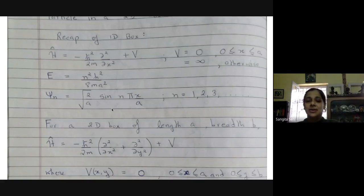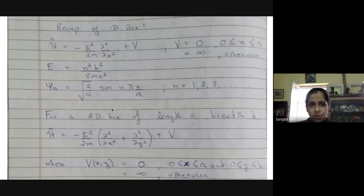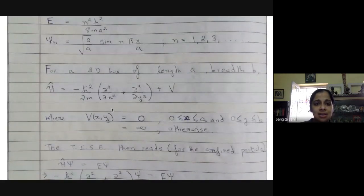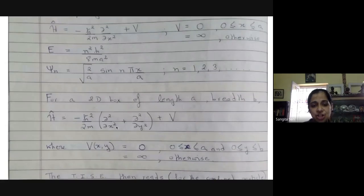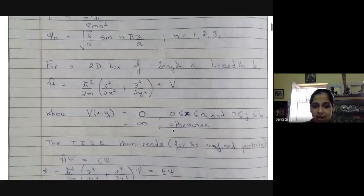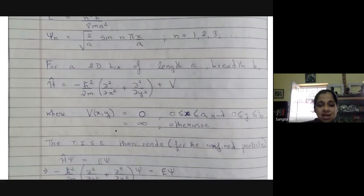The ground state is even and then it oscillates even, odd, even, odd. If you want to extend this to a two-dimensional box of length a and breadth b, so the particle is now confined in a plane and a rectangle, then the Hamiltonian now has two kinetic energy terms: one for the motion in the x direction and one for the motion in the y direction. There is also a potential — we want infinite barriers on all four sides of this rectangle.